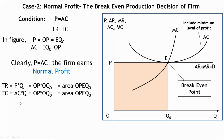Again, multiplying average cost by quantity, we can arrive at total cost. In the figure, at Q0 output level, average cost EQ0 equals OP. Therefore, total cost equals OP multiplied by OQ0. In the figure, vertical distance OP multiplied by horizontal distance OQ0 is equal to the area of the rectangle OPEQ0, shown by the blue colored area.